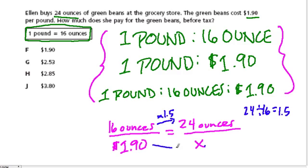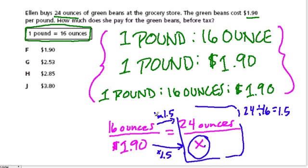Now, since the price is per ounce, we want to scale up the dollars by the same amount. So we want to multiply that by the same number, which is 1.5. So $1.90 times 1.5 will give us x.